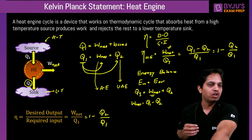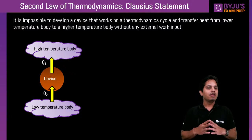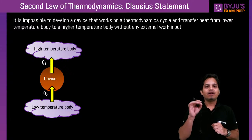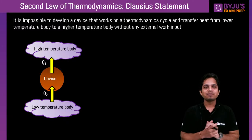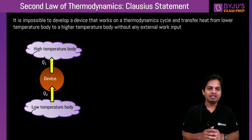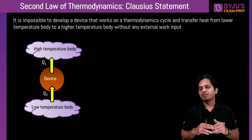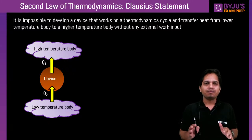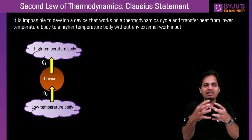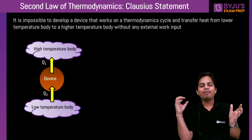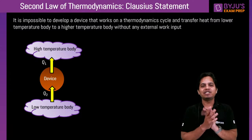Let us move on to the next statement — Clausius statement. Clausius statement tells you that it is impossible for a device or thermodynamic cycle to transfer heat from low temperature to high temperature. In nature, heat transfer always happens from high temperature to low temperature. If you bring a hot body and a cold body in contact, heat transfer will always happen in the decreasing temperature direction.